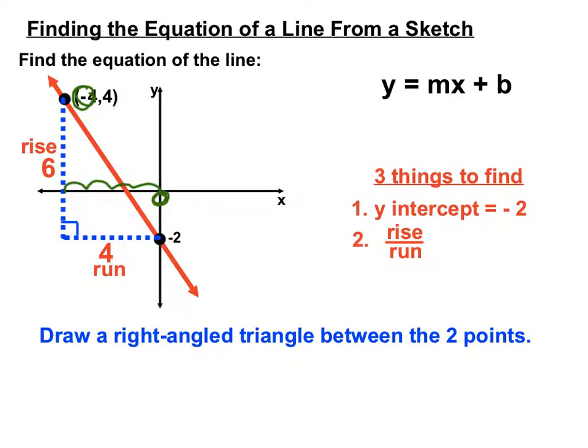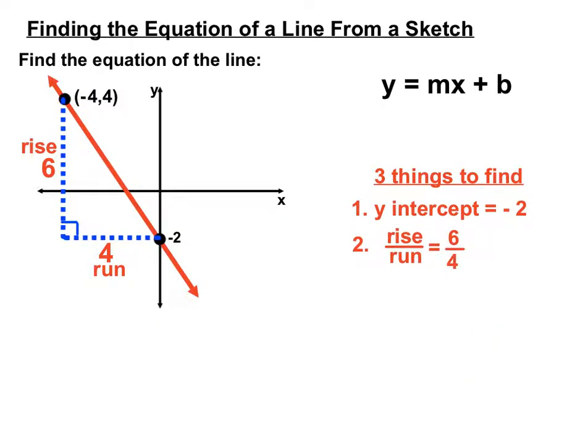So we've got a rise over run there. The triangle helped us with our counting. We have a rise of 6 on top and a run of 4. Now, 6 over 4 simplifies down to be 3 over 2. We'll simplify any fractions whenever we get a chance. So we've got a rise over run of 3 over 2. That's our second bit of information that we're gathering from this situation.